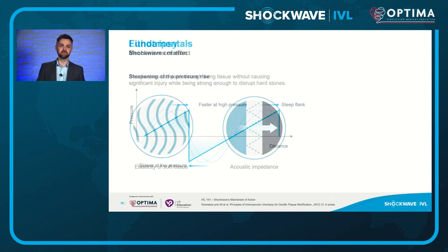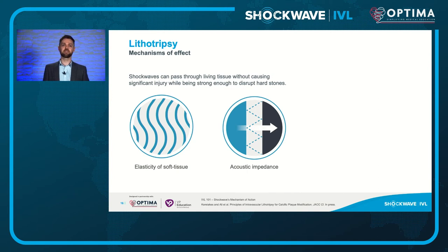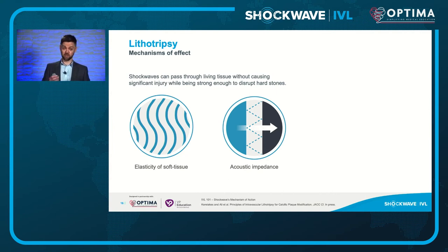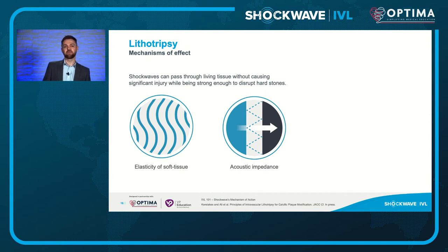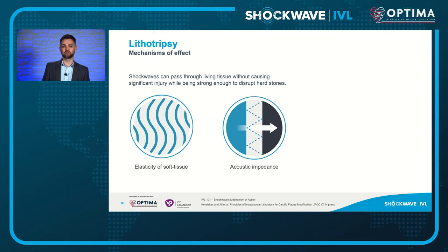Shockwaves have been used in renal lithotripsy since the early 1980s, following the discovery that shockwaves can pass through living tissue without causing significant injury while being strong enough to disrupt hard stones. This is predicated on two key things: first, the elasticity of soft tissue allows even very high amplitude pressure waves of short duration to pass through without causing harm; second, when a shockwave encounters a tissue interface, disruptive forces are produced if there's a big acoustic mismatch — a big difference in density between media. Water and soft tissues have similar acoustic impedances, allowing shockwaves to propagate without harm, but soft tissue to hard tissue creates a big acoustic mismatch and strong forces.